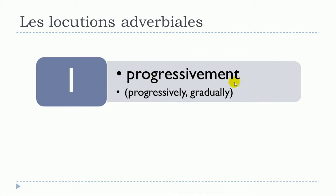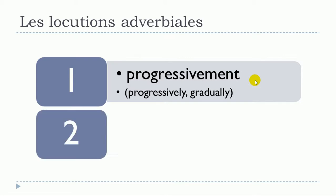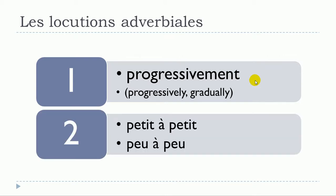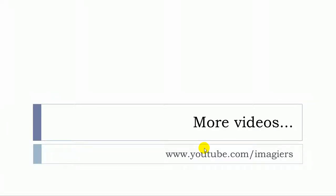And finally: progressivement — progressively. In locution adverbiale, you could use either petit à petit or peu à peu. So whether progressivement, petit à petit, or peu à peu. And that's it!